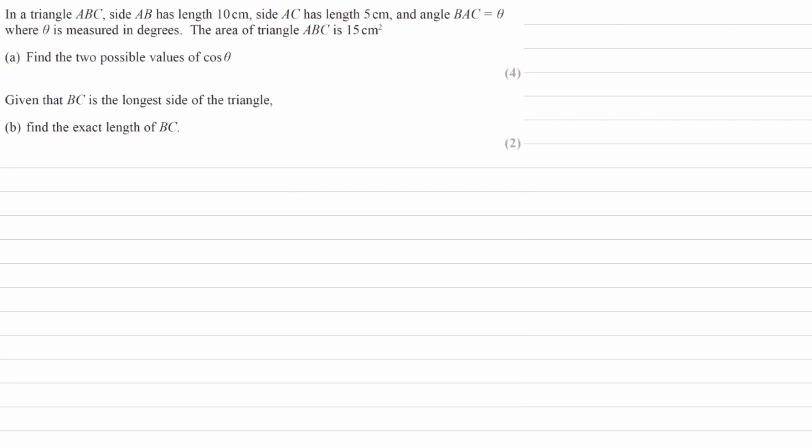Side AB has a length of 10, so I'll draw that here. AC has a length of 5. We're told that angle BAC equals theta. This is A, this is B, this is C. Here is our triangle, this bottom length is 5. We're trying to find the two possible values of cos theta. The area of the triangle is 15 centimeters squared.